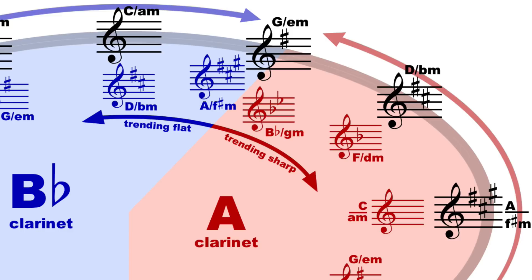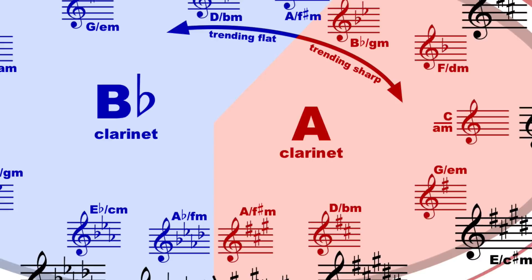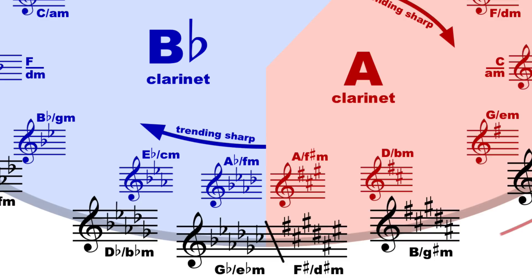The same modulation rule applies to the enharmonic gateway of concert F-sharp or G-flat. In works that modulate to the five, use a B-flat clarinet, which after all will only be playing in A-flat major modulating to E-flat major — four flats to three flats. On the other hand, if your piece modulates counterclockwise, like to concert B or E major, then use an A clarinet, which will be modulating from their transposed A major to the keys of D or G.